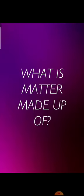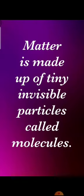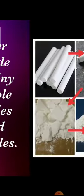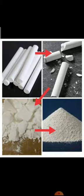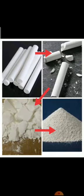Now the question arises, what is matter made up of? Matter is made up of tiny invisible particles called molecules. For example, if we break a piece of chalk, we would find that it breaks into smaller pieces. If we keep on breaking these pieces, they would become smaller and smaller till they become a powder. Scientists can break down the particles even further, till they become so tiny that they are no longer visible. These tiny invisible particles are called molecules.